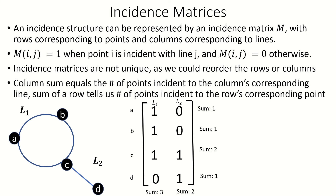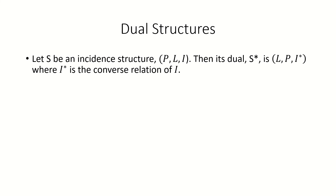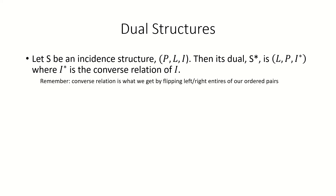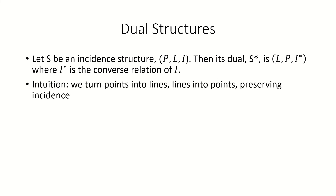Next, let's introduce the idea of a dual structure. If we have an incidence structure S with point set P, line set L, and incidence relation I, then its dual S* is the incidence structure with L as its point set, P as its line set, and the converse relation of I as its incidence relation — which is what we get by swapping the left and right entries of the incidence relation. Intuitively, the dual structure is what we get when we turn points into lines and lines into points, preserving all incidences between objects of different types.